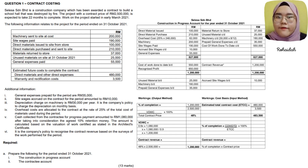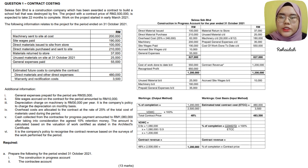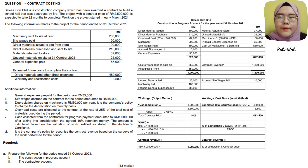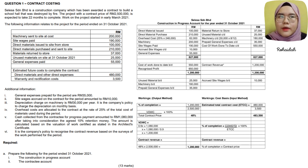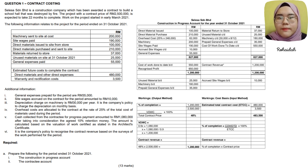Now we move to the fourth step: contract revenue. Contract revenue is credited to the construction in progress account. Contract revenue has two methods: the output method and the input method. In this question, it is required to use the output method, which uses the value of work certified as a proportion of the contract price. To find the contract revenue, first we need to find the value of work certified, and secondly calculate the percentage of completion by dividing the value of work certified by the total contract price and multiplying by 100%. Finally, we multiply the percentage of completion by the total contract price to get the contract revenue.